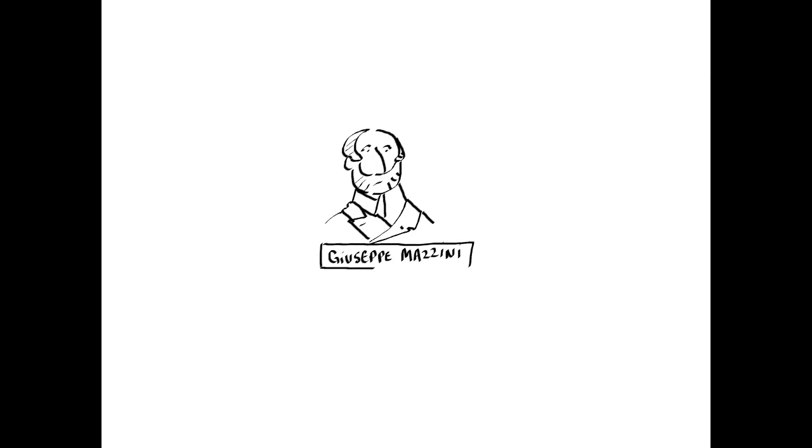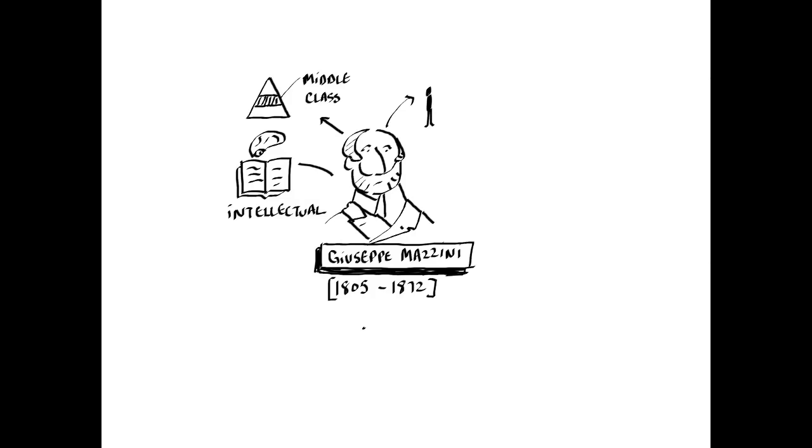Giuseppe Mazzini was an Italian nationalist who was born in 1805 and died in 1872. We know that he's from the middle class. We also know that he is educated and an intellectual.